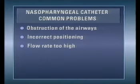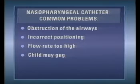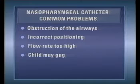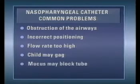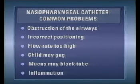Other less severe problems include: the child may cough or gag when the catheter goes in — if this does not stop, pull the catheter back 1 or 2 centimetres. The catheter may become blocked with mucus. The dry oxygen supply can also cause inflammation of the child's throat.